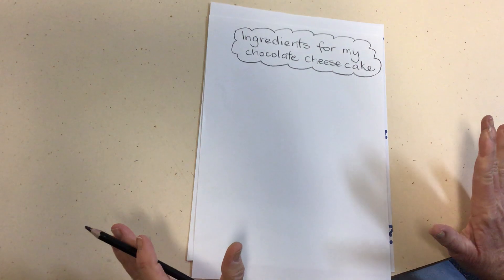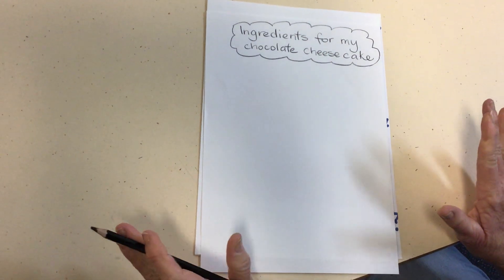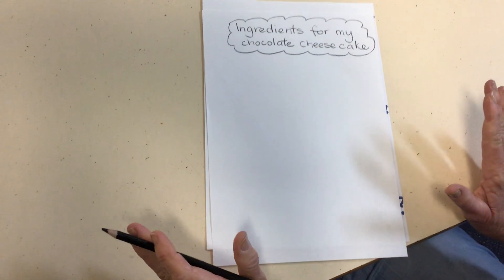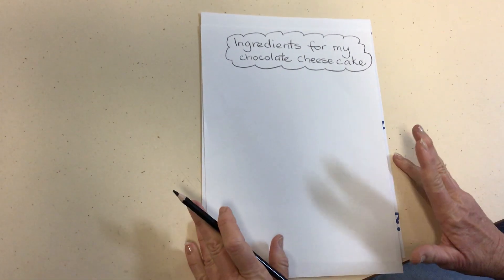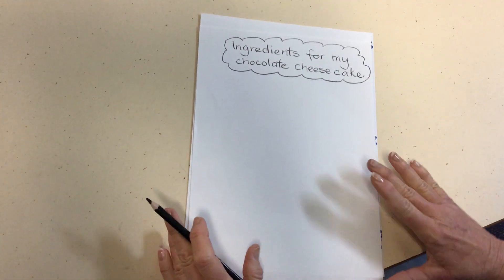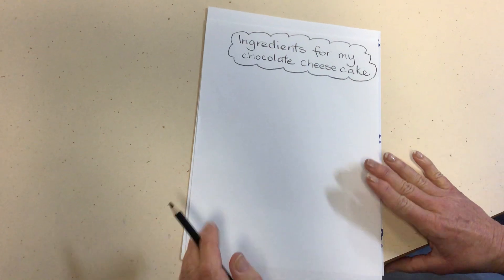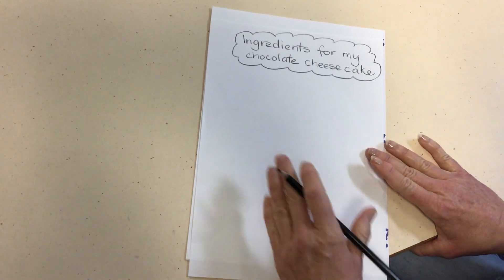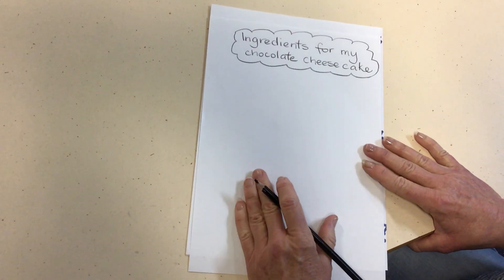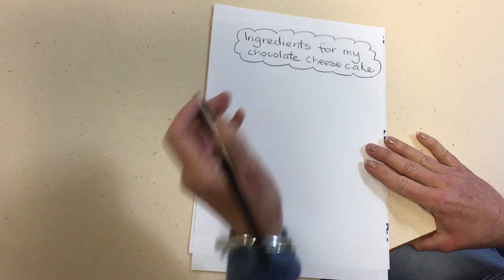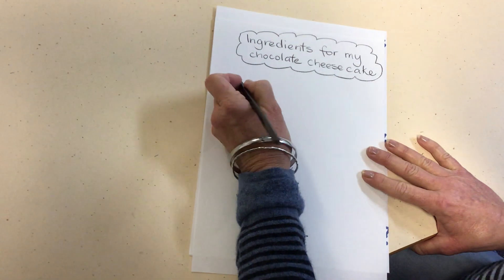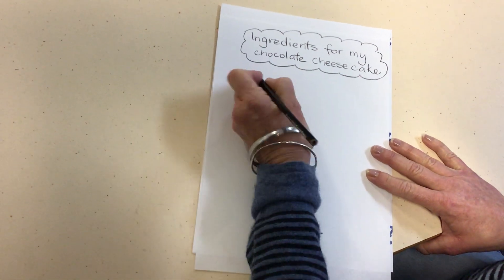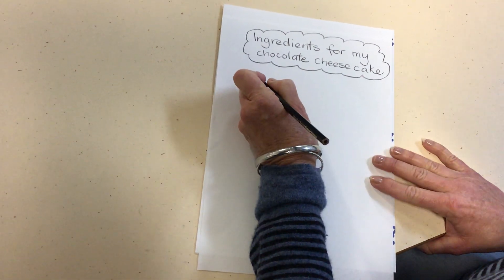I'm going to need to list the ingredients for my chocolate cheesecake. Usually people make lists like this when they're about to go shopping. So my ingredients, and I'm going to dot point them, are: